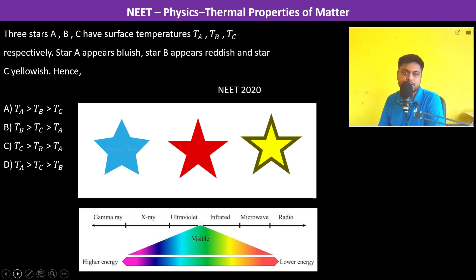Three stars A, B, and C have surface temperatures TA, TB, and TC respectively. Star A appears bluish, B is reddish, and star C is yellowish. Now we have to find the relationship between the temperatures.